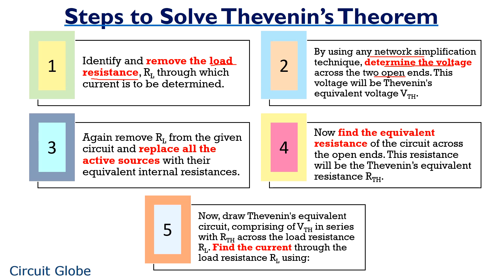Further, you have to consider the basic circuit and remove RL from that circuit again, and you have to replace all the active sources with their equivalent internal resistance. After replacing the active sources with their internal resistance, you have to find the equivalent resistance of the simplified circuit across the two open ends, and this equivalent resistance will act as Thevenin's resistance.